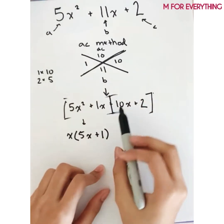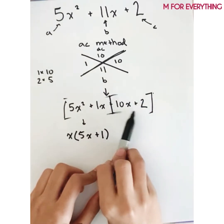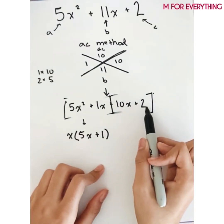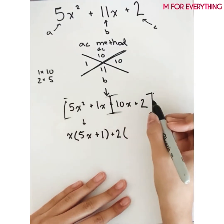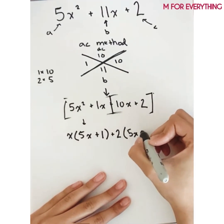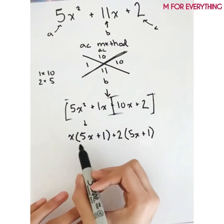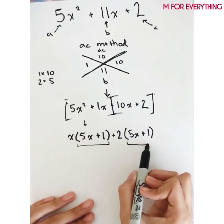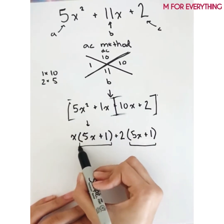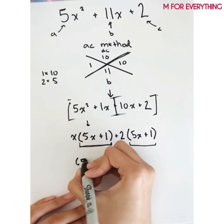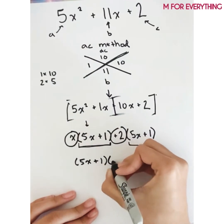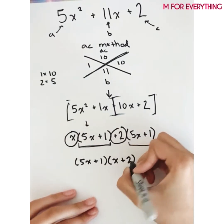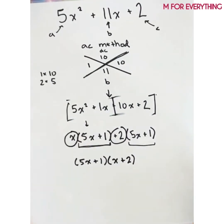Both groups have the same factor (5x + 1), which means we can combine them. The answer is (5x+1)(x+2). That's how you use the AC method when 'a' is not equal to 1. It's not as hard as it looks.